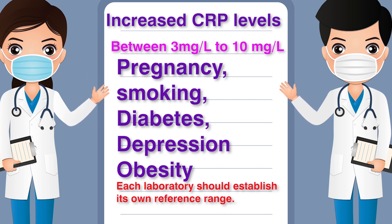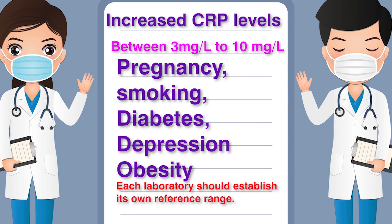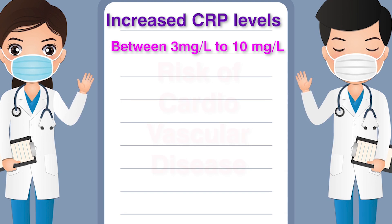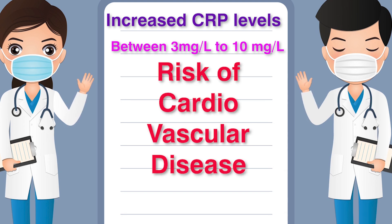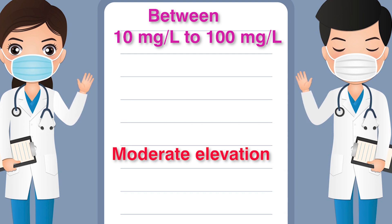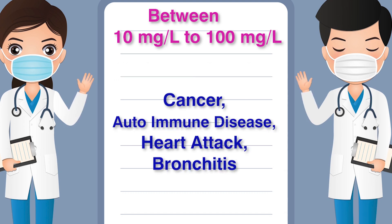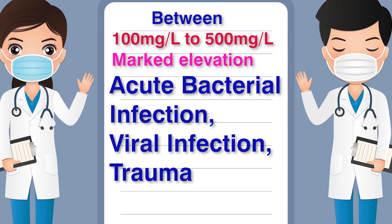C-reactive protein between 3 mg/dL to 10 mg/dL represents normal or minimal elevation, seen in pregnant women or people with diabetes, depression, obesity, or smoking; it may also indicate risk of cardiovascular disease. Between 10 mg/L to 100 mg/L is called moderate elevation, observed in people with cancer, autoimmune disease, heart attack, and bronchitis.